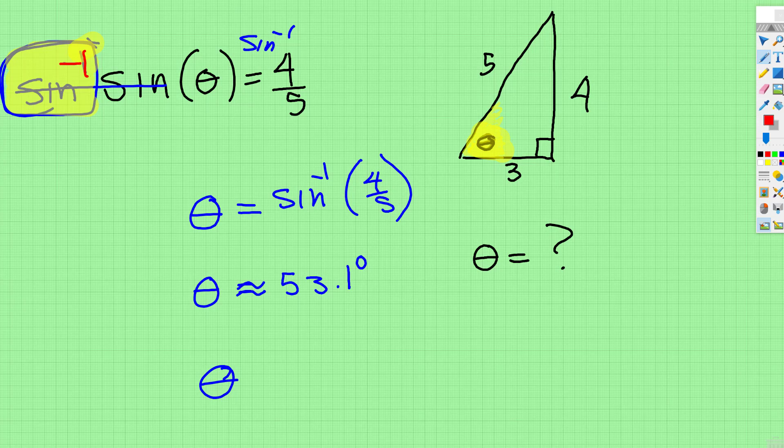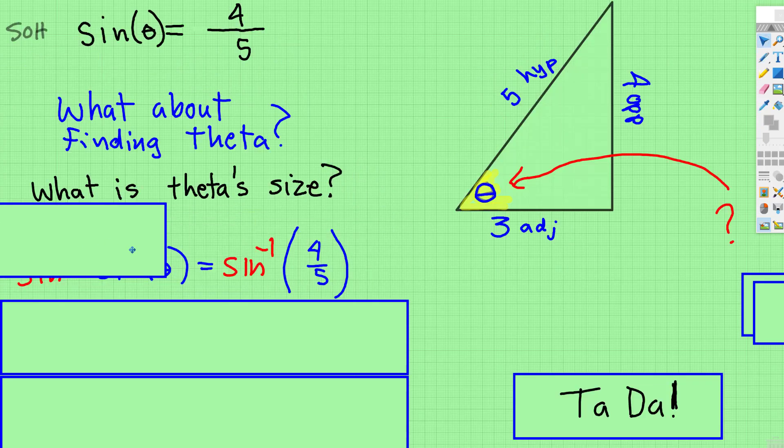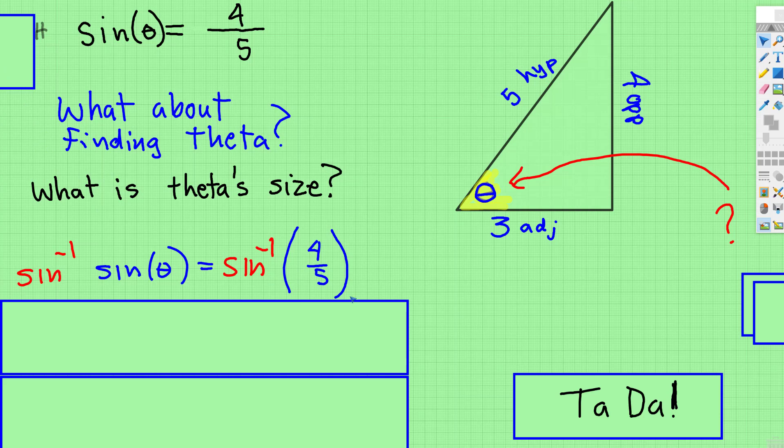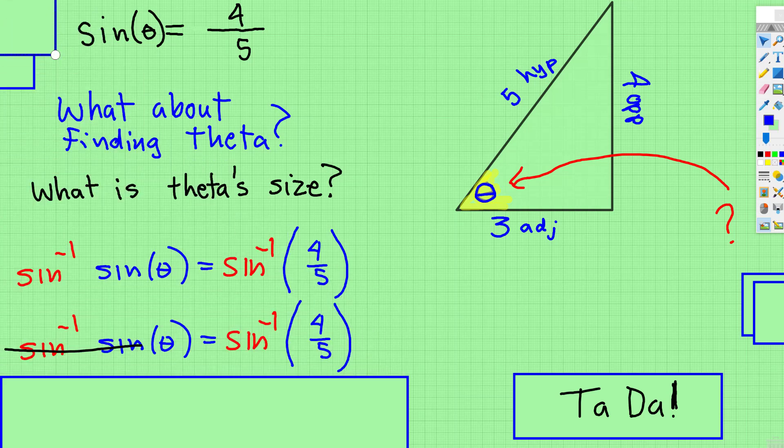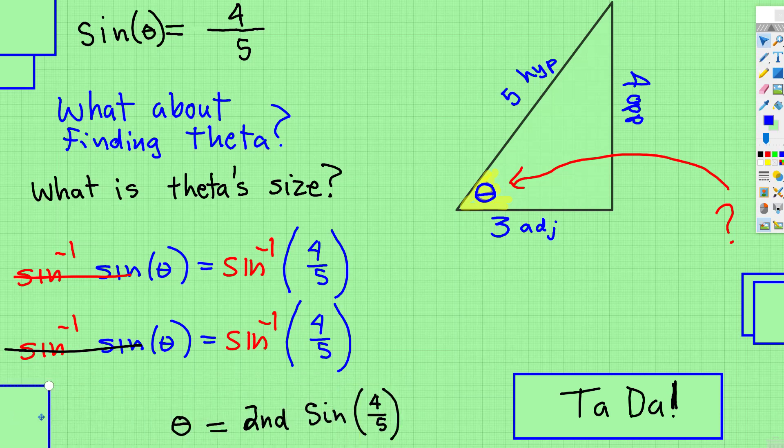I just took the inverse sine to both sides. When I did it on the left, the sine's canceled, leaving theta, and I do that to the right, and then you just type it into the calculator. In the calculator, you're going to type second sine, it gives you a left parenthesis, then you type 4, divide 5, right parenthesis,